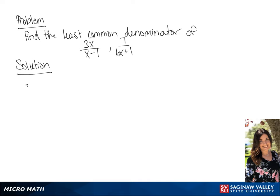We want to find the least common denominator between the fractions 3x over x minus 1 and 7 over 6x plus 1. In this case, our least common denominator is going to be (6x + 1) times (x minus 1).